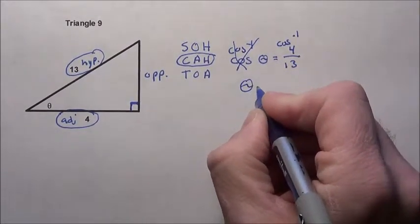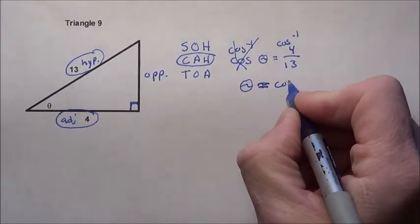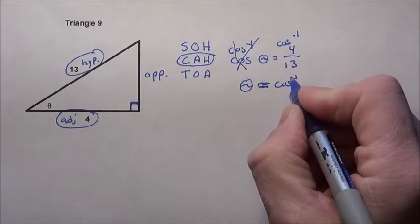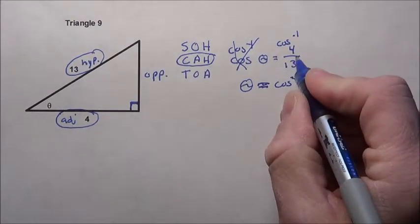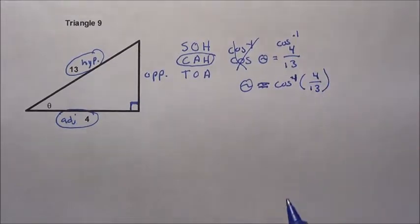So theta, who's left there, is equal to the inverse cosine—that's negative 1 right there—of 4 thirteenths.